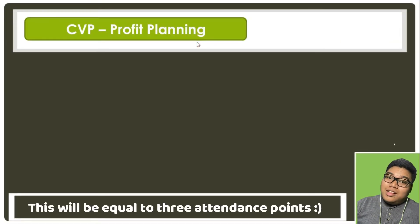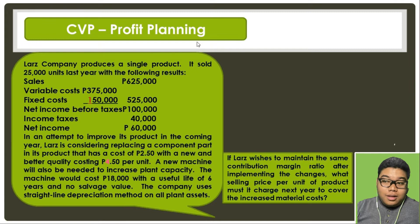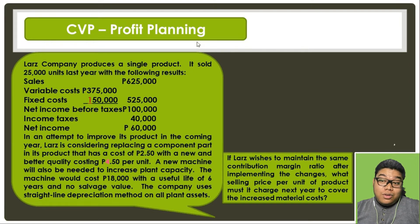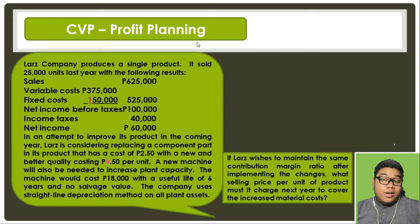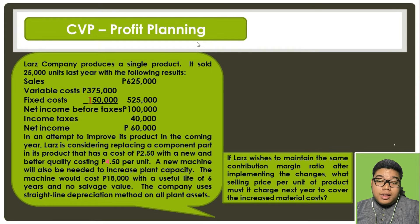We go to the next problem. A large company produces a single product and sold 25,000 units last year with the following results: sales of 625, variable cost 375, fixed cost 150, for a total of 525, so net income before tax is 100,000, income tax 40,000, and net income 60,000.